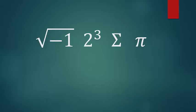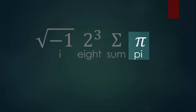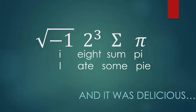That is, the square root of negative 1, 2 to the third power, the summation symbol, and then the symbol for pi. Or, I ate some pi, translated to English, I ate some pi, and it was delicious.